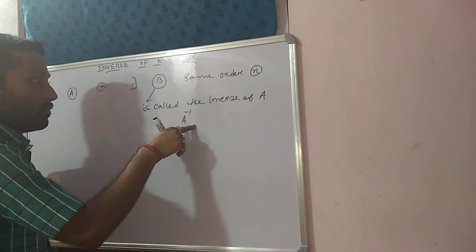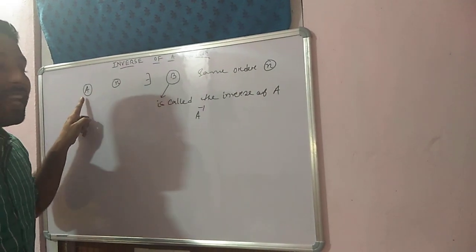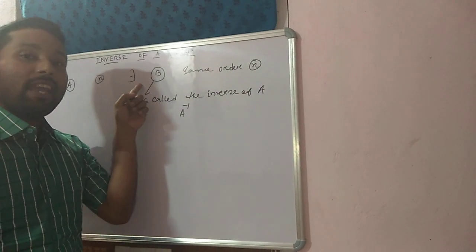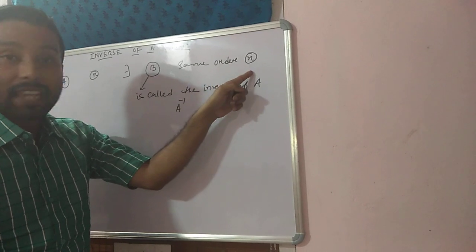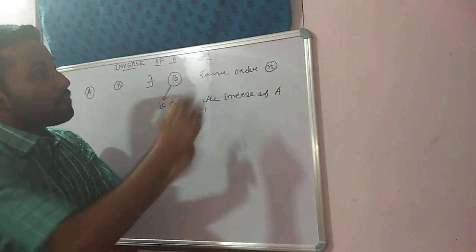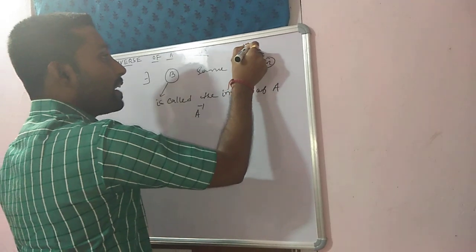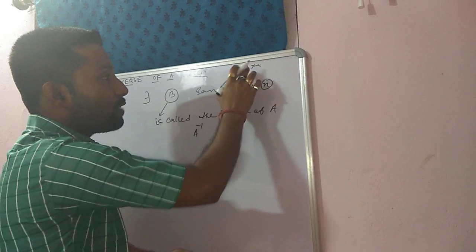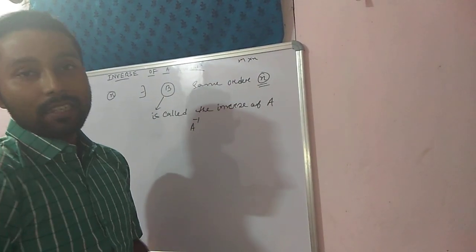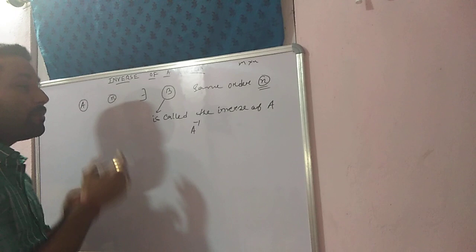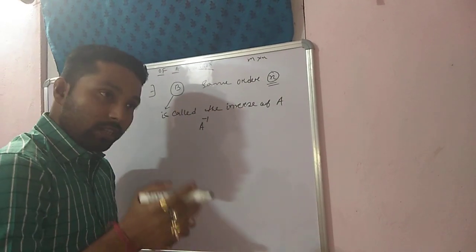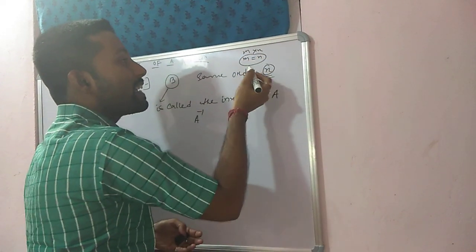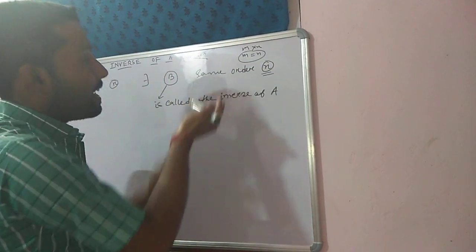It is denoted by A inverse. If A is a non-zero square matrix of order N, then there exists another matrix B of the same order N. Now, if I write order N, why not M into N? Because order is generally denoted by M into N, right? But here I am writing only order N because A and B both are square matrices, and we know the condition of a square matrix is M equal to N. So we can replace M by N, and that's why we can write order N.